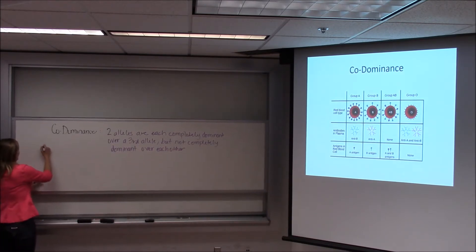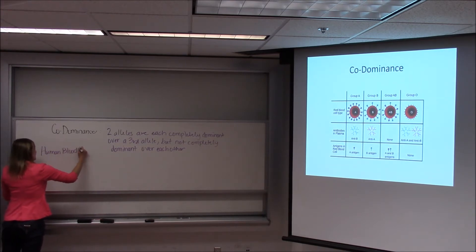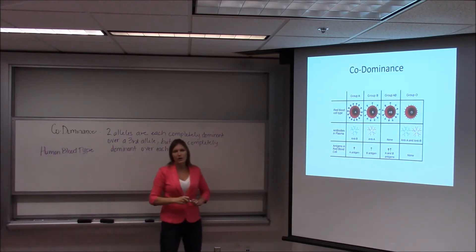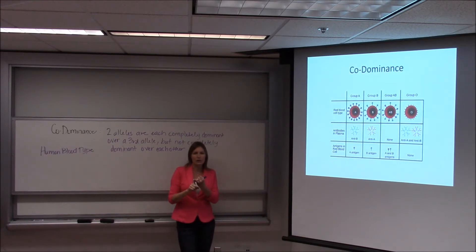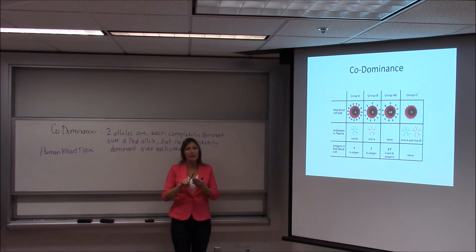Human blood type. We're talking about some cell surface markers that occur on red blood cells. You either have type A markers, type B markers, no markers, or both A and B markers.